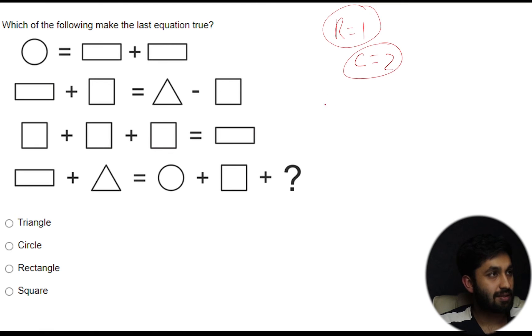Therefore that makes circle equal two. Now how did I do that? Let's simplify it. First step we made rectangle equal one, so that's one plus one. One plus one equals two. Quick maths. Circle therefore equals two.